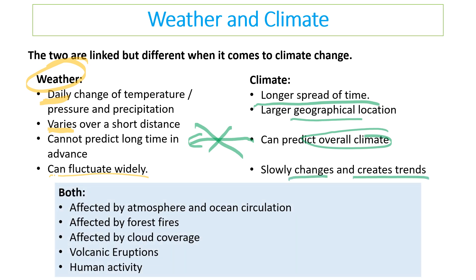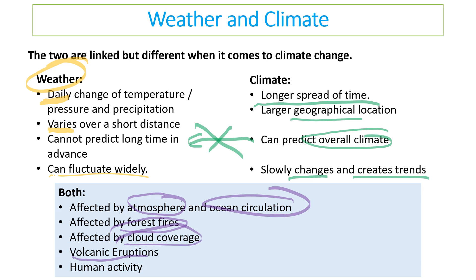Both weather and climate do have some similarities. They're both affected by the atmosphere — the air and its temperature — and ocean circulation. They're both affected by forest fires, cloud coverage, and volcanic eruptions. And because climate directly links to weather, they're both affected by human activity.